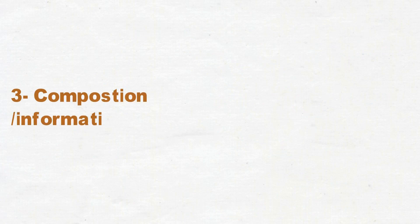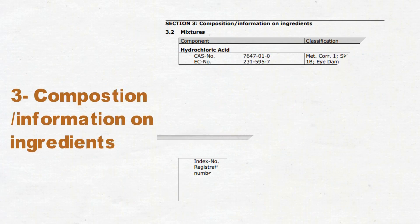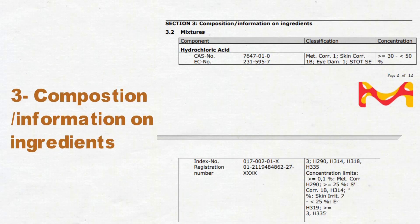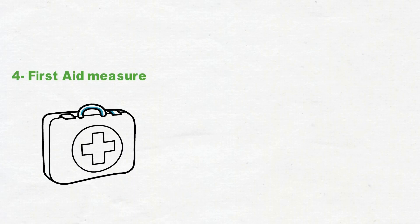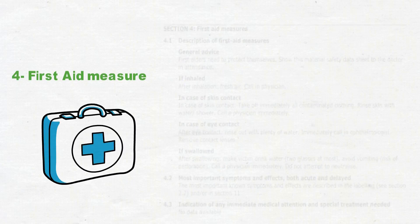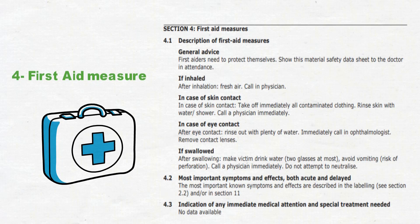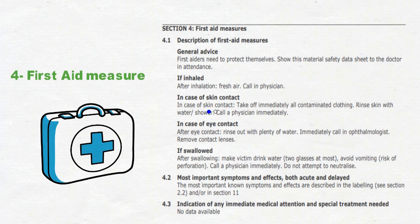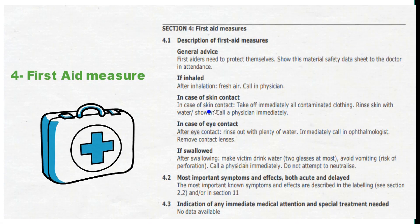Section number 3 covers composition information for the substance or mixture. In section number 4, First Aid Measures, you learn what to do in case of incidents — for example, if the chemical makes contact with your eyes or skin — and it may also indicate any immediate medical or special treatment needed.